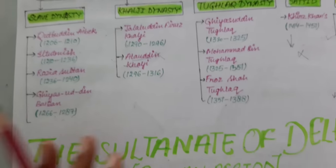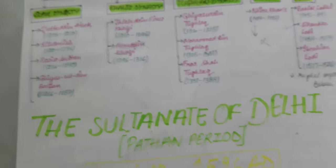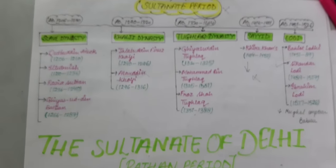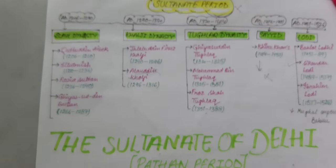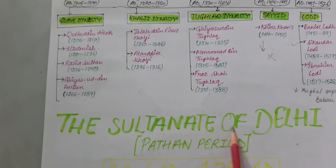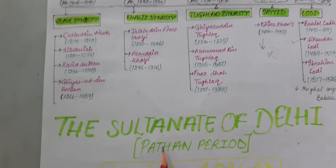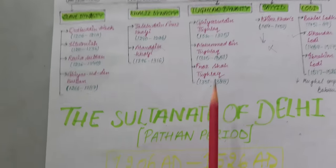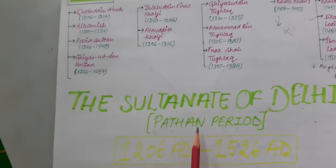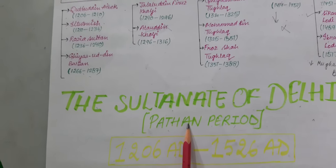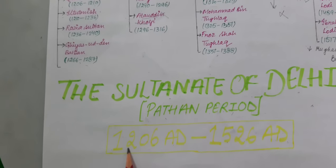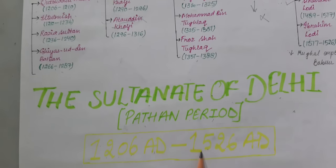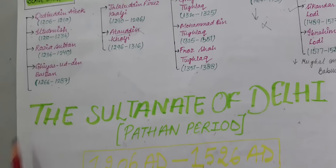The Sultanate of Delhi is also called the Pathan period. The Sultanate period totally ruled from 1206 AD to 1526 AD.